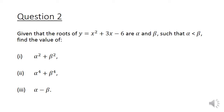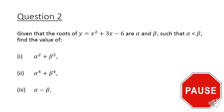Now to apply Vieta's formulas, have a look at question 2. Given that the roots of y equals x squared plus 3x minus 6 are alpha and beta, such that alpha is less than beta, find the value of: part 1, alpha squared plus beta squared; part 2, alpha to the fourth power plus beta to the fourth power; and part 3, alpha minus beta. Please pause the video here to give this question a good try.